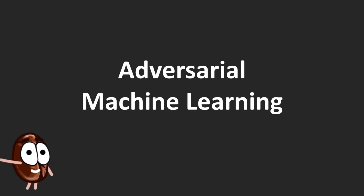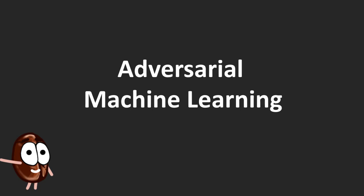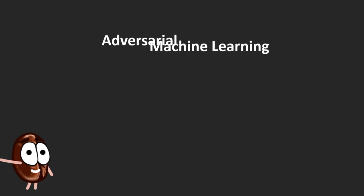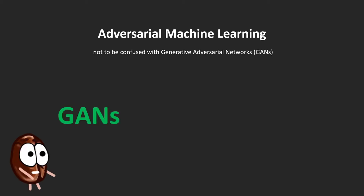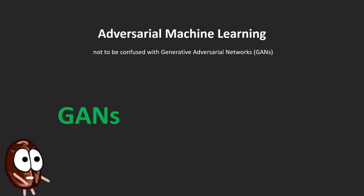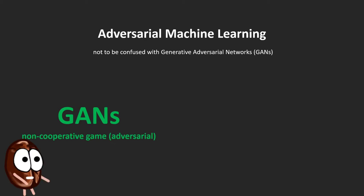The first thing we need to know about adversarial machine learning is how to tell it apart from generative adversarial networks (GANs). GANs are a class of models trained in a non-cooperative way, hence the name adversarial. In GANs, the goal of the adversaries is to make the models stronger, so the game is well-intended.